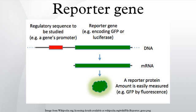Gene expression assays: reporter genes can also be used to assay for the expression of the gene of interest, which may produce a protein with little obvious or immediate effect on the cell culture or organism. In these cases, the reporter is directly attached to the gene of interest to create a gene fusion. The two genes are under the same promoter elements and are transcribed into a single messenger RNA molecule, which is then translated into a protein. It is important that both proteins be able to properly fold into their active conformations and interact with their substrates despite being fused. A segment of DNA coding for a flexible polypeptide linker region is usually included so that the reporter and the gene product will only minimally interfere with one another.